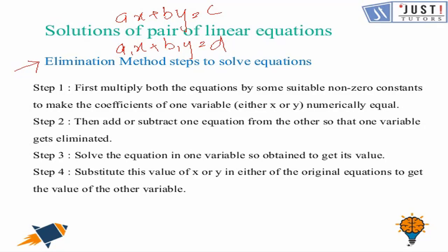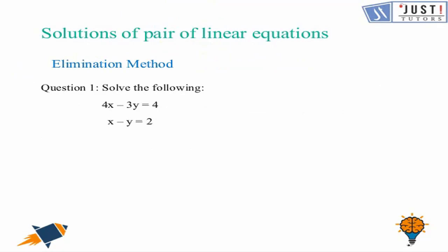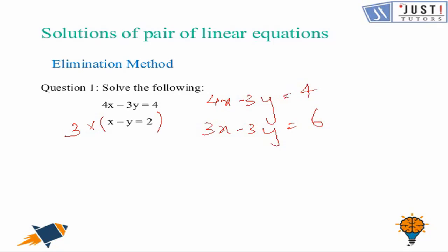Now let's try a question: 4x minus 3y equals 4, and x minus y equals 2. We multiply the second equation by 3 to get 3x minus 3y equals 6. Subtracting, we change the signs: 4x minus 3x gives 1x, and the y terms cancel, leaving x equals minus 2.